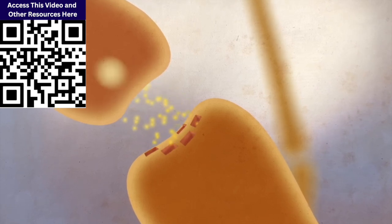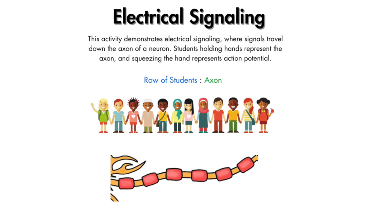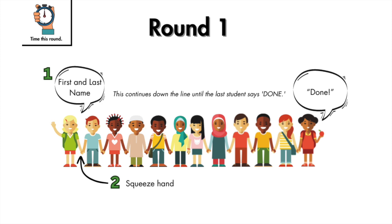After students watch the video, you jump into the first activity, which has two parts: electrical signaling and chemical signaling. To demonstrate electrical signaling between neurons, have students line up in a row holding hands — the last person says 'done.' The teacher times each round and writes the times on the board. Round one: the first student says the next person's first and last name, then squeezes their hand, signaling the next person's turn — continuing until the last person says 'done.'